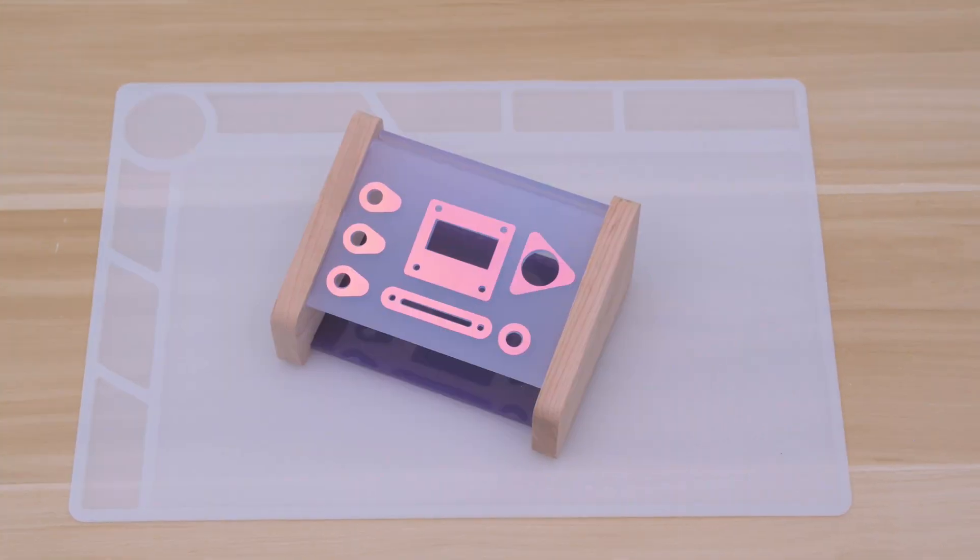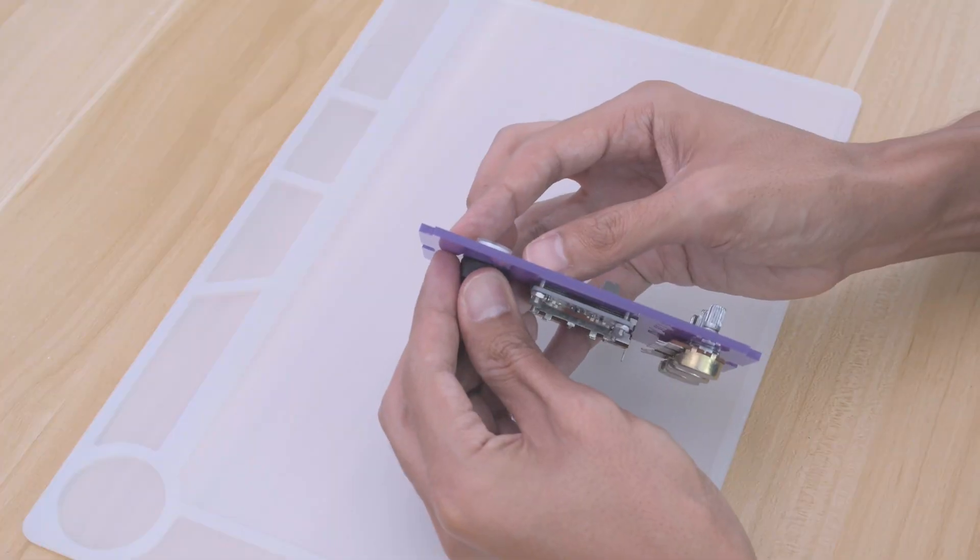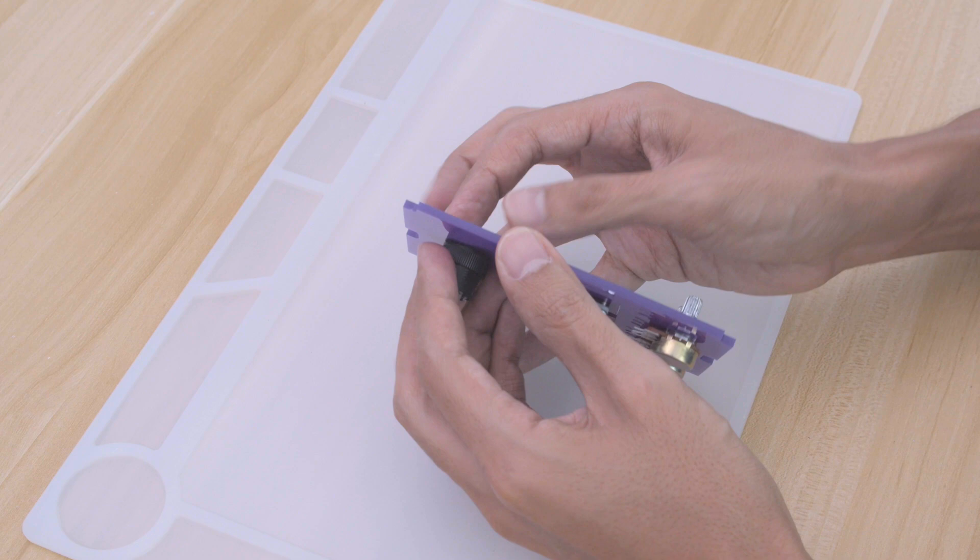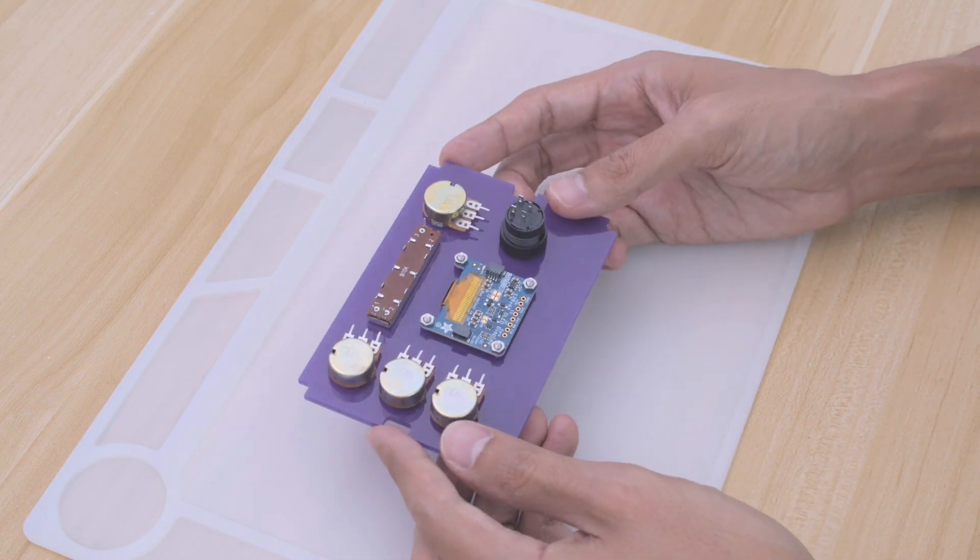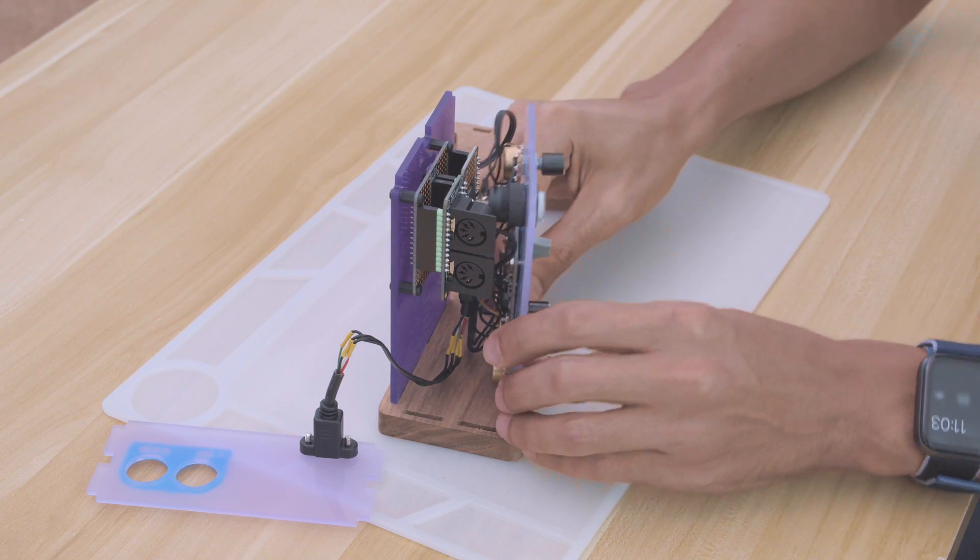I did a quick dry fit of the parts before panel mounting the components. The potentiometers are panel mounted using the included hardware. With everything wired up, the panels are press fitted into the slots of the wooden sides.